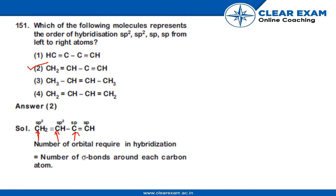and this C is also sp hybridized. The number of orbitals required in hybridization is equal to the number of sigma bonds around each carbon atom.